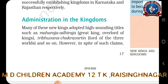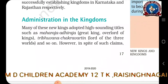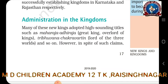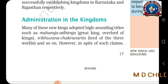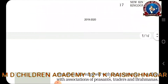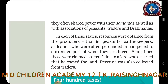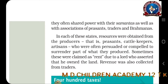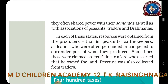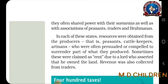Many of these new kings adopted high-sounding titles such as Maharajadhiraja and Tribhuvana Chakravartin. When you watch history-based TV serials, such words are announced when the king enters. Maharajadhiraja means 'great king' or 'king of kings,' and Tribhuvana Chakravartin means 'lord of the three worlds.' In spite of such claims, they often shared power with their samantas as well as with associations of peasants, traders, and Brahmanas — they could not act alone.